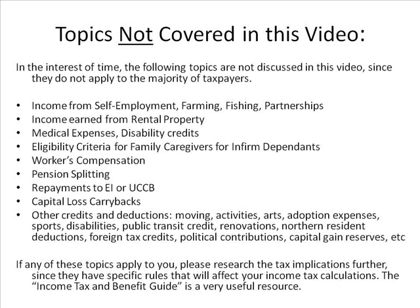The following topics are not discussed in this video since they do not apply to the majority of taxpayers: self-employment, farming, fishing, partnerships, rental property, medical expenses, disability credits, eligibility criteria for family caregivers for infirm dependents, workers compensation, pension splitting, repayments to EI or UCCB, capital loss carrybacks, and other credits and deductions such as moving, activities, arts, adoption expenses, sports, disabilities, public transit credit, renovations, northern resident deductions, foreign tax credits, political contributions, and capital gain reserves. If any of these topics apply to you, please research the tax implications further since they have specific rules that will affect your income tax calculations.